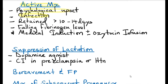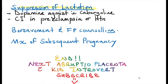Active management is indicated if the patient is distressed, there are signs of uterine infection, if the fetus has been retained for more than 10 to 14 days, or if there is a falling fibrinogen level. Treatment is medical induction with or without oxytocin infusion. For suppression of lactation, give a dopamine agonist like cabergoline or bromocriptine — these are contraindicated in preeclampsia or hypertension. Advise the patient to wear a tight bra and offer bereavement and family planning counselling.